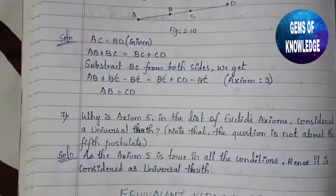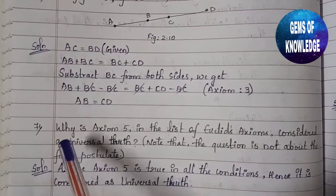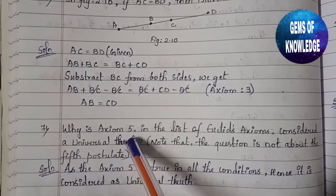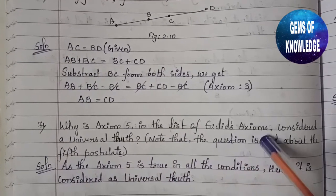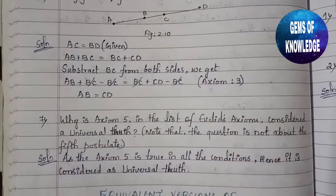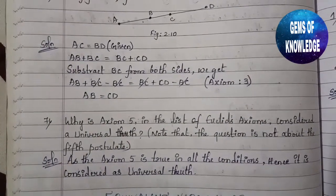The last question is: Why is Axiom 5 in the list of Euclid's Axioms considered a universal truth?